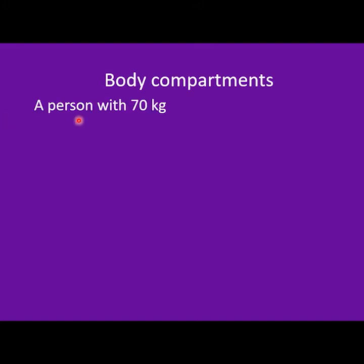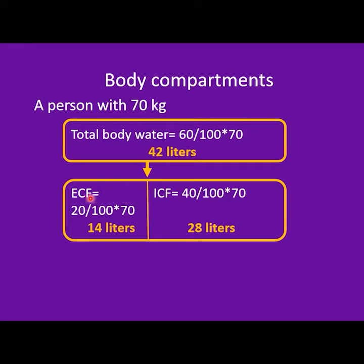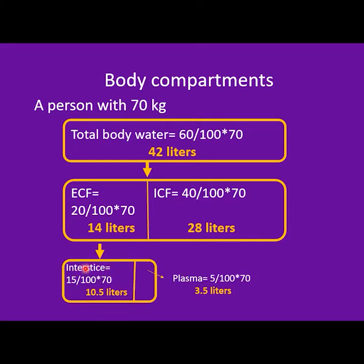Let's take an example. If a person weighs 70 kilograms, their total body water would be 60% of 70, which is 42 liters. The extracellular fluid would be 20% of 70, which is 14 liters. The intracellular fluid would be 40% of 70, which is 28 liters. The interstitial fluid would be 15% of 70, which is 10.5 liters. And plasma would be 5% of 70, which is 3.5 liters.